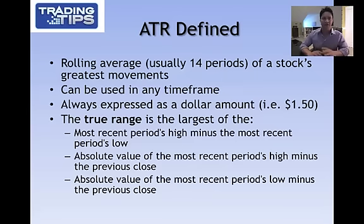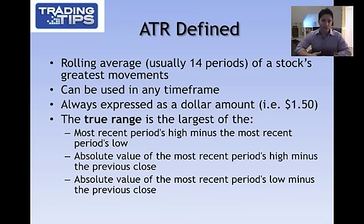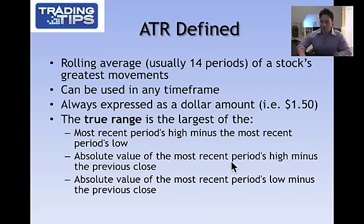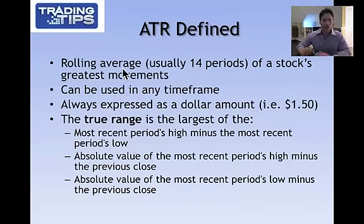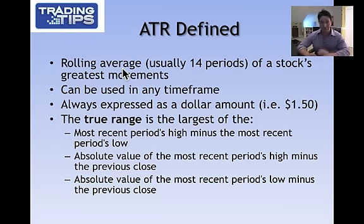ATR is always expressed as a dollar amount. So if I were to say that IBM has an ATR of $2.50 on its daily chart, that means that for the past 14 days — about two weeks — the stock has been moving roughly $2.50 per day. The true range is the largest of: the most recent period's high minus the most recent period's low; the absolute value of the most recent period's high minus the previous close; or the absolute value of the most recent period's low minus the previous close. ATR takes the largest of these three numbers and uses that in its average. So if a stock gaps down $5 but only moves $1 the next day, ATR would actually count that $5 gap.